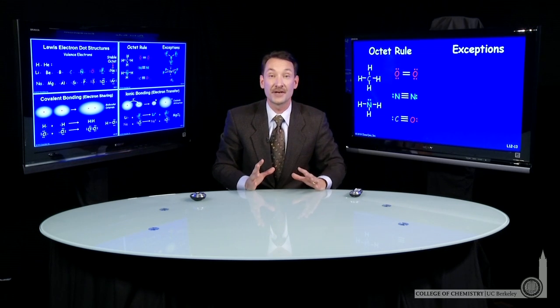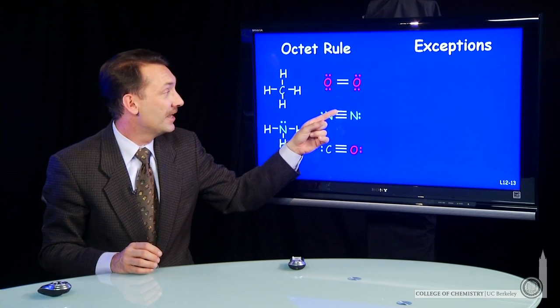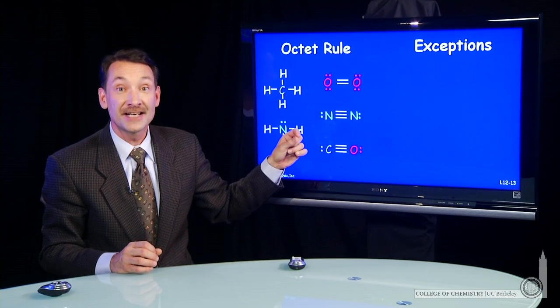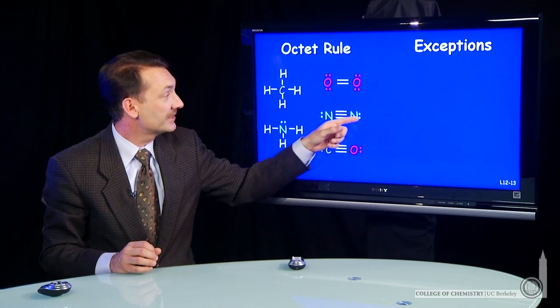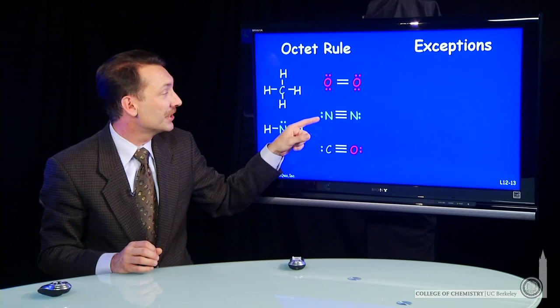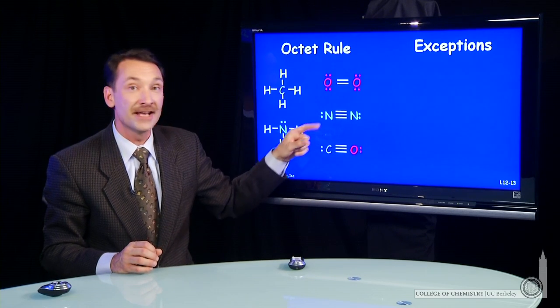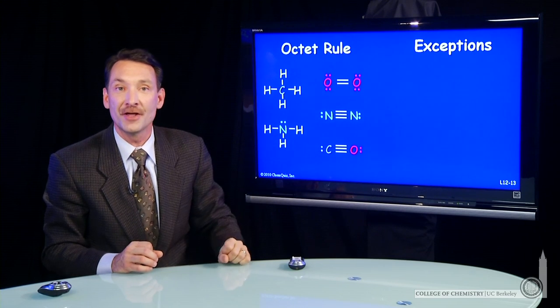We write the Lewis electron structure with a triple bond. Here it is, nitrogen each sharing six electrons. The total count is 10, 2, 4, 6, 8, 10. Those are all the valence electrons. For each nitrogen, it's 2, 4, 6, 8, a stable octet. 2, 4, 6, 8 on the other nitrogen.